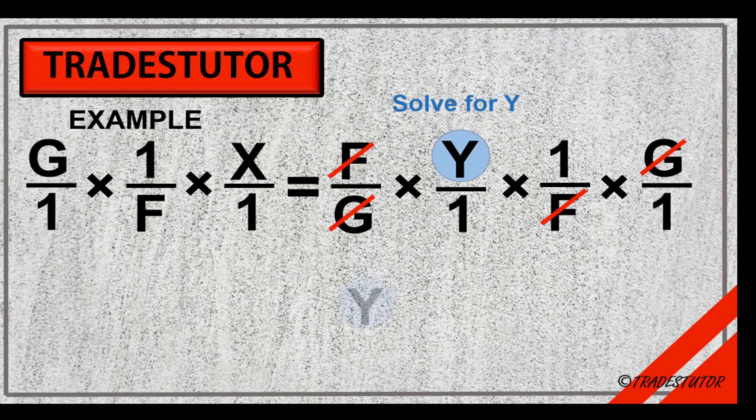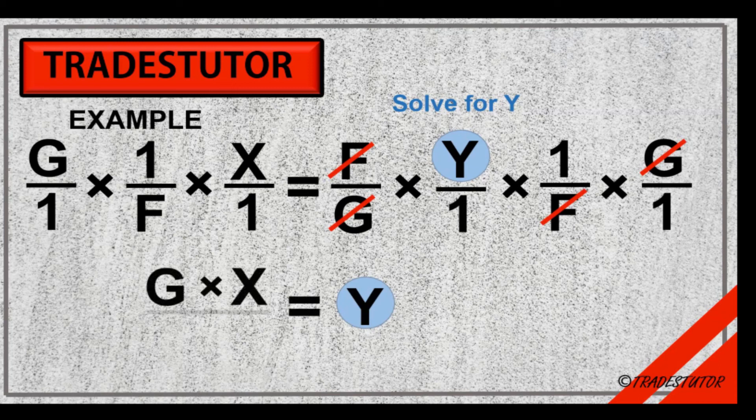So Y equals, and then on the left side, just multiply them all together. We'll get G times X over F. And there you have it. You've solved for Y. You've transposed that equation.